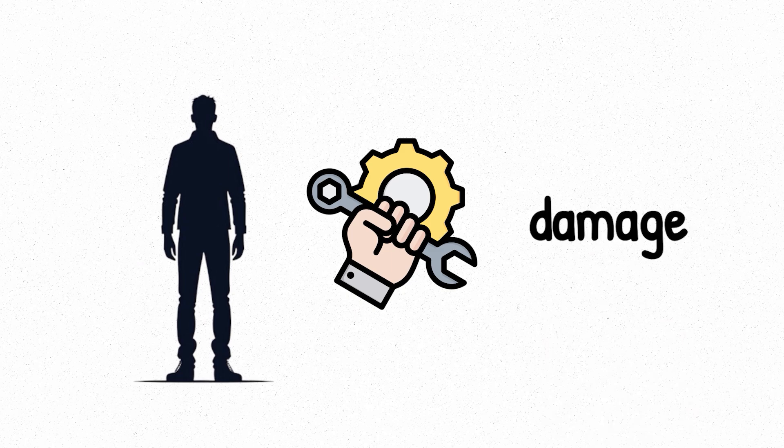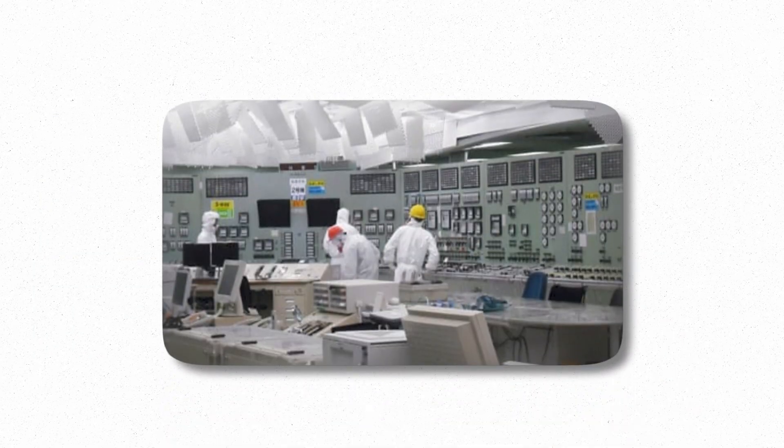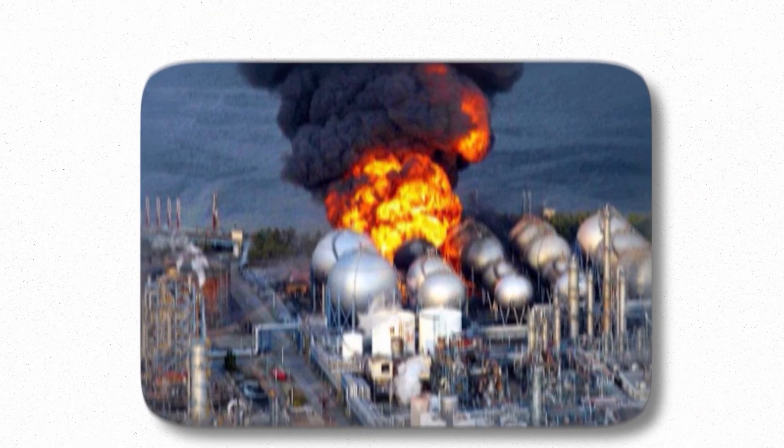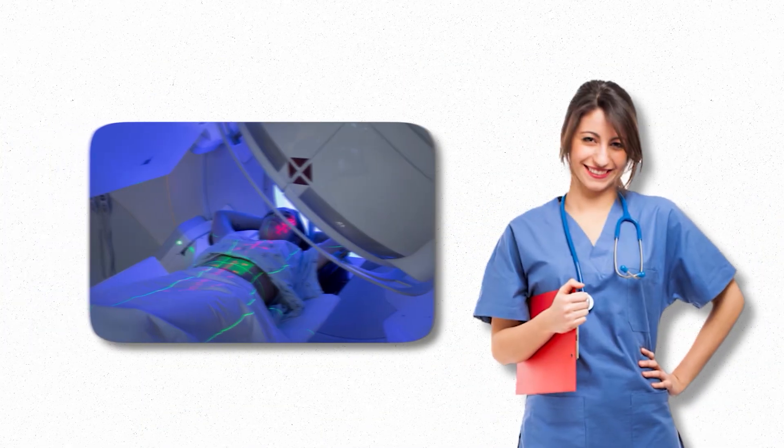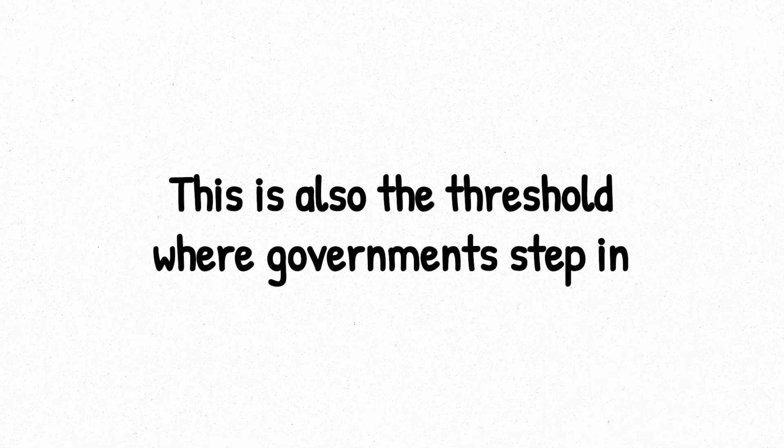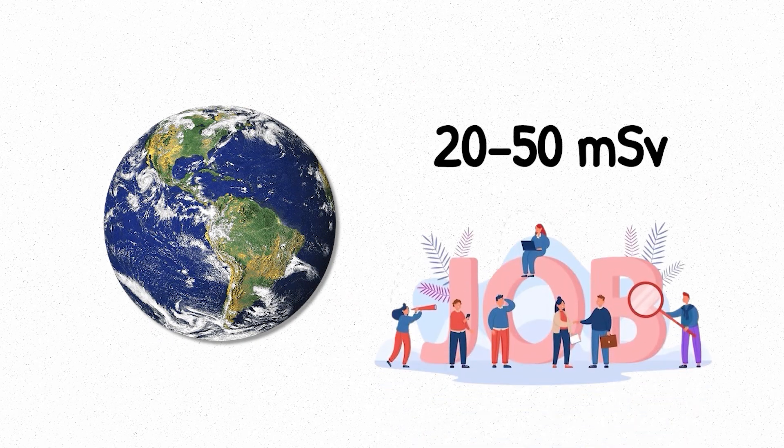DNA begins to take hits. The body can usually repair the damage, but the more exposure you receive, the higher the odds of long-term consequences, particularly cancer. Take power plant technicians at Fukushima. In the early days of the crisis, many workers received doses between 20 and 50 millisieverts as they worked to stabilize the reactors. These weren't accidental exposures. They were accepted risks. Medical workers administering radiation therapy or imaging patients may accumulate similar doses over time. This is also the threshold where governments step in. Most countries limit occupational exposure to 20 to 50 millisieverts per year, depending on the job.